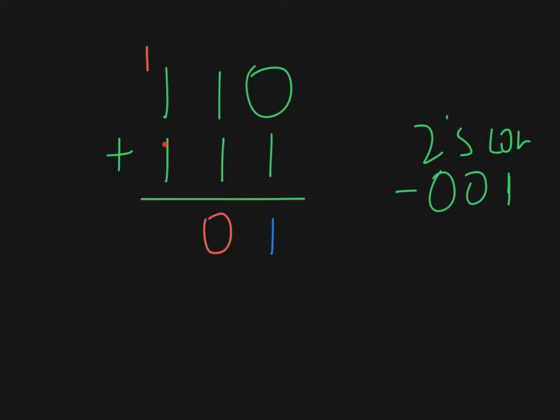Come over to the third column, we've got 1 plus 1, which is 1, 0, plus 1 is 1, 1. Let's just emphasise that. 1 plus 1 plus 1 is 1, 1.